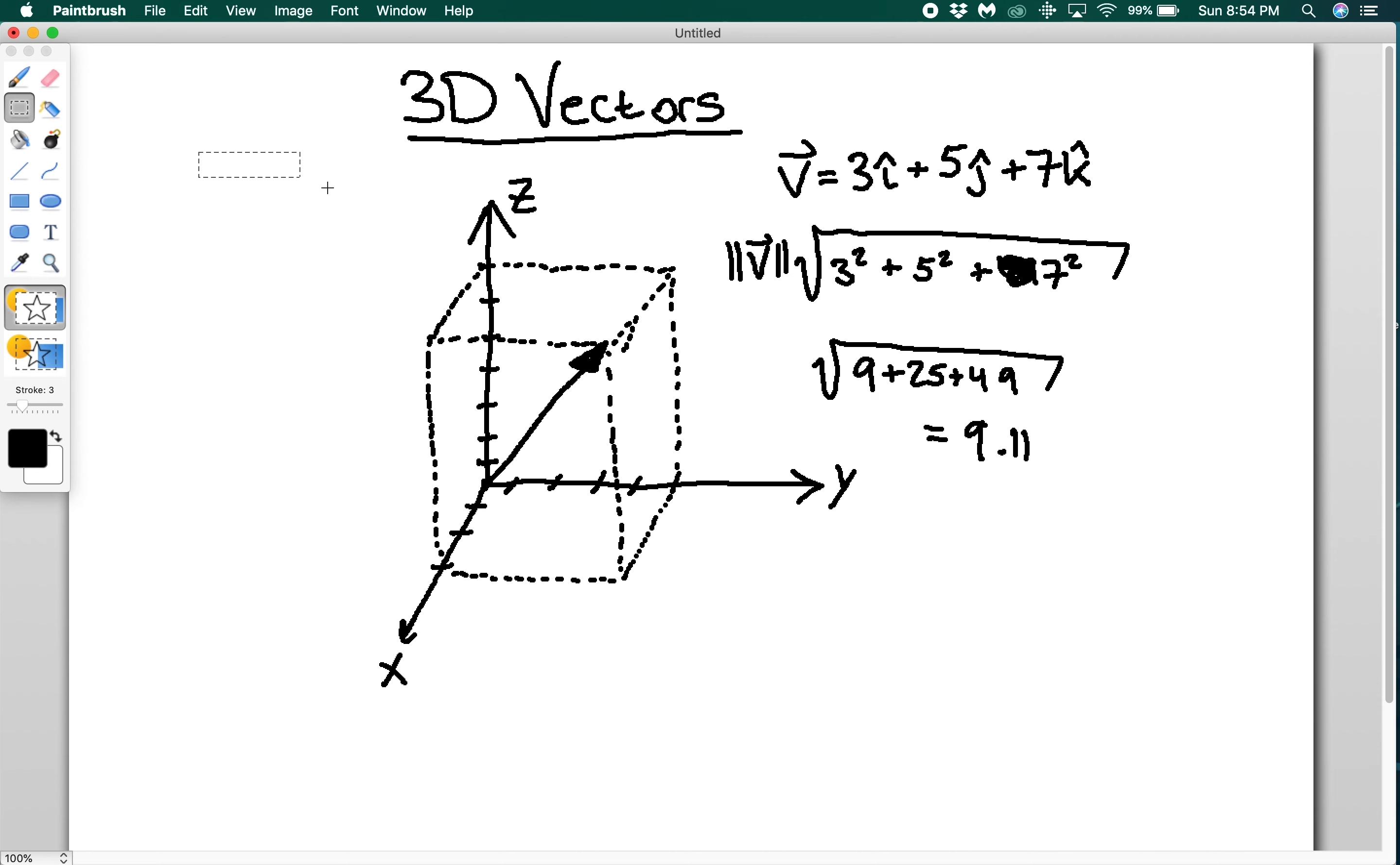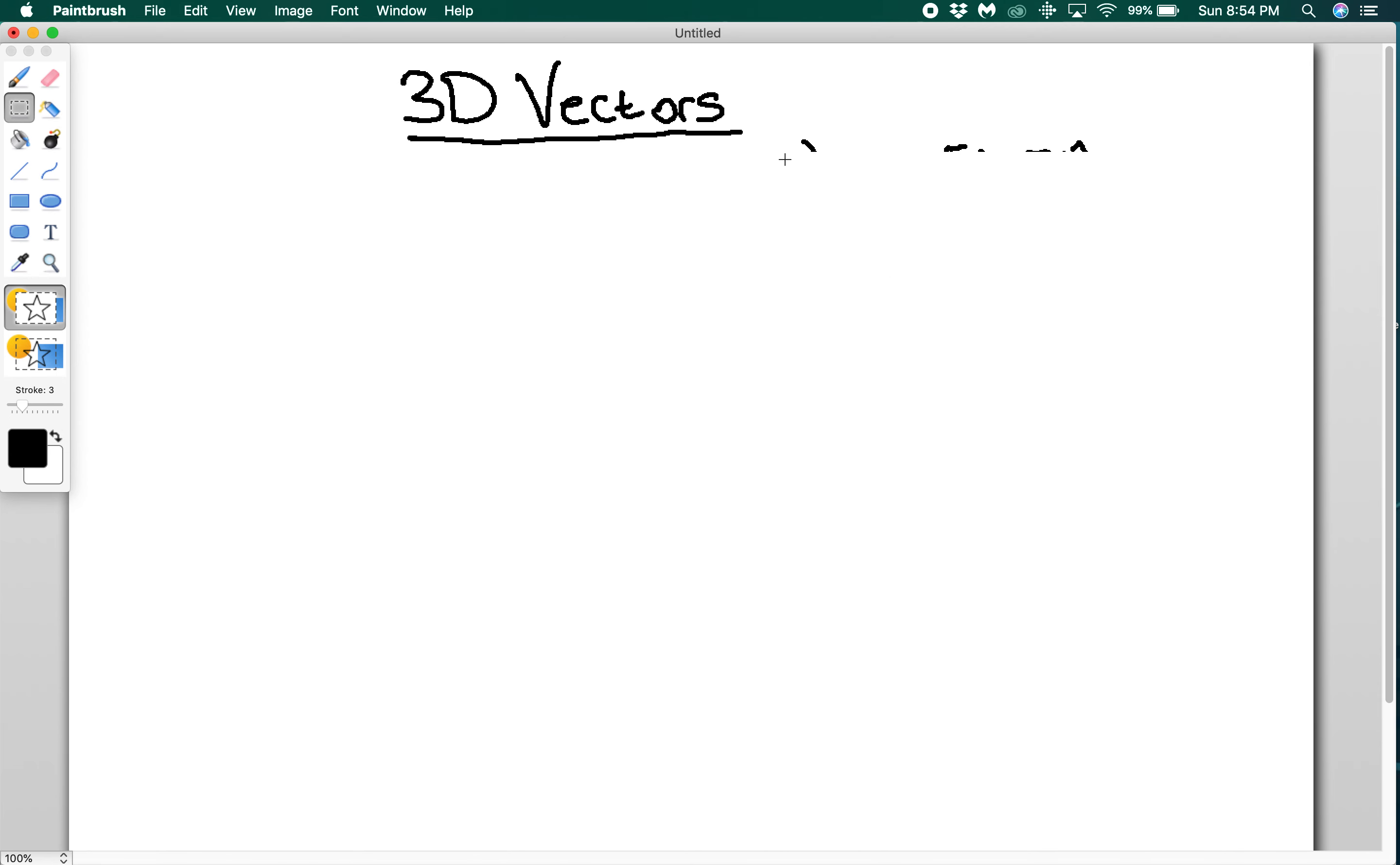So there's some other things that we're going to want to do with vectors. Let's say I want to find a displacement vector between two points. So I'm going to say I have point A, which is (8, 2, 13), and point B, which is going to be (3, 10, 4).